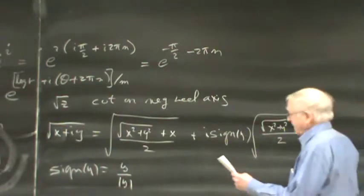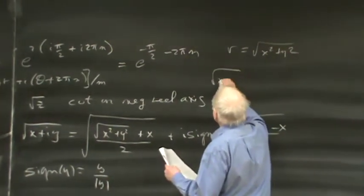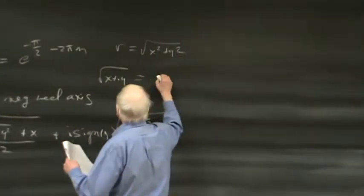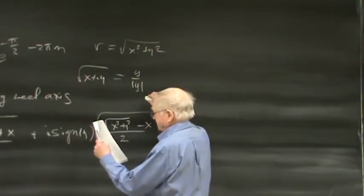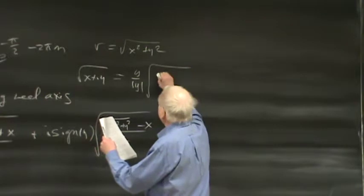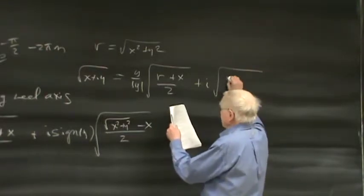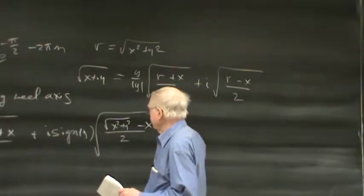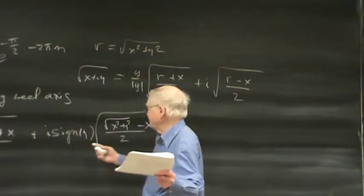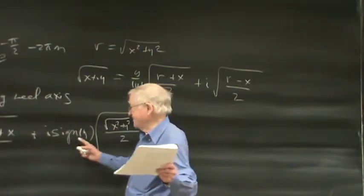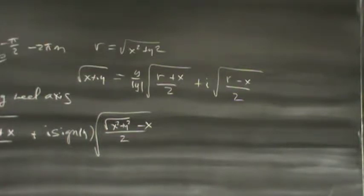If you put the cut on the positive real axis, and let r = √(x²+y²), then √(x+iy) = (y/|y|)·√((r+x)/2) + i·√((r-x)/2). This is a clear way of saying what it is if you're writing a computer program and want to compute this.